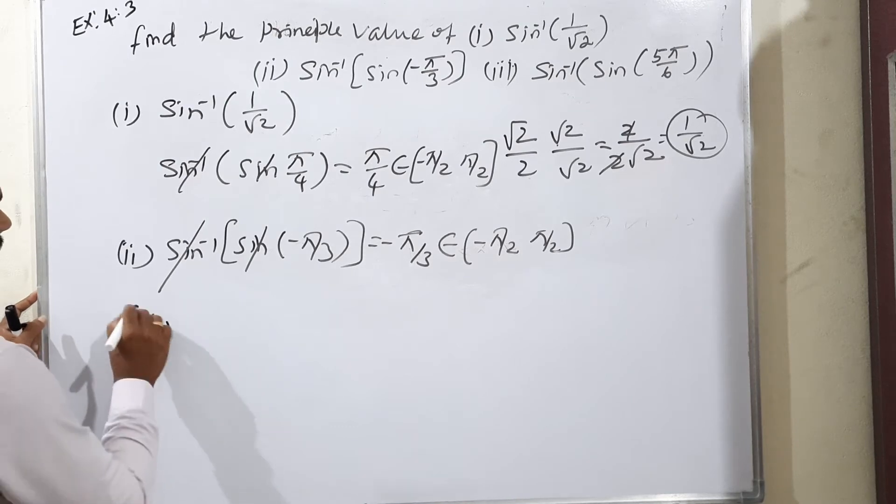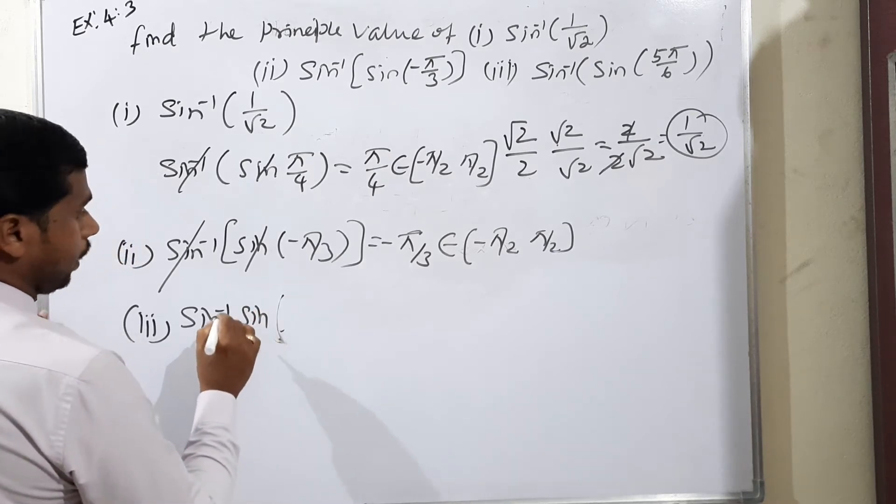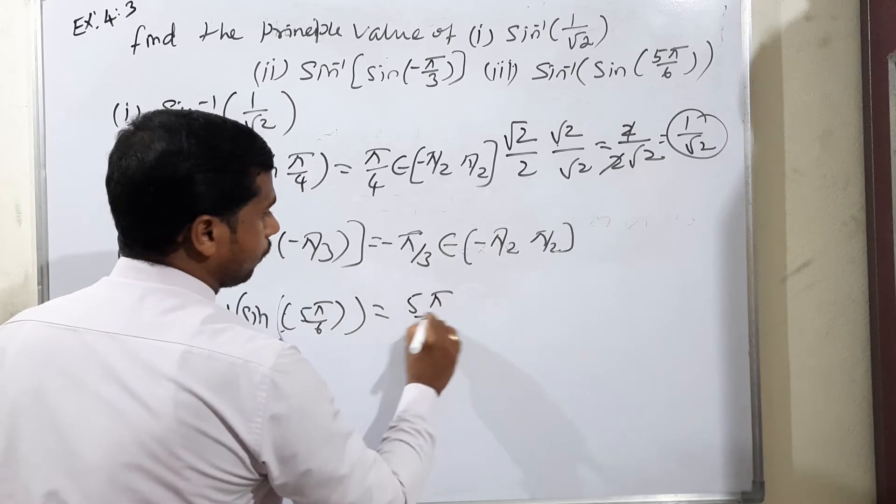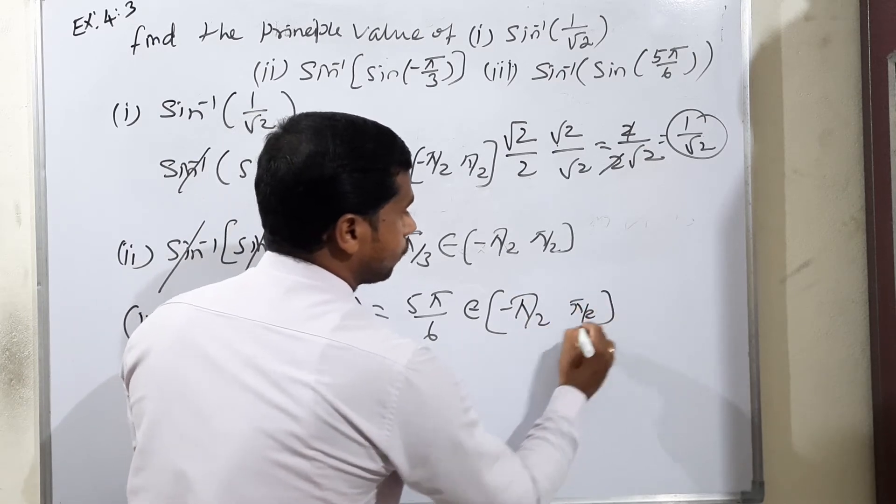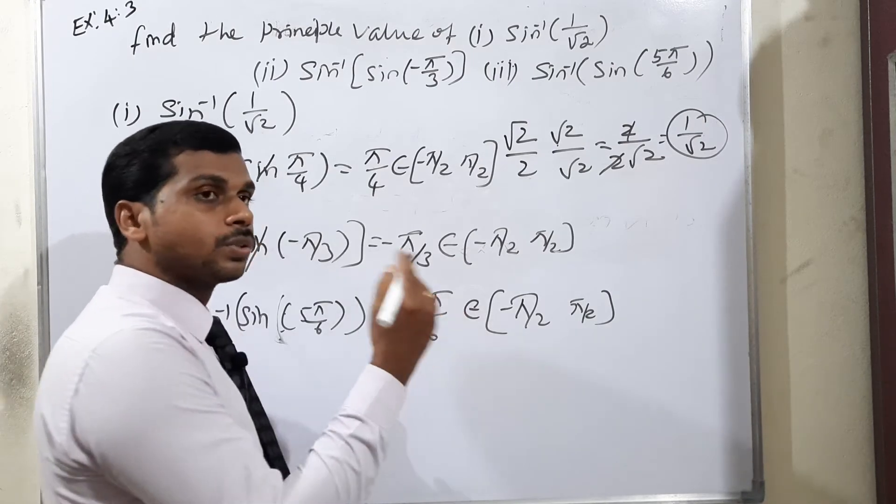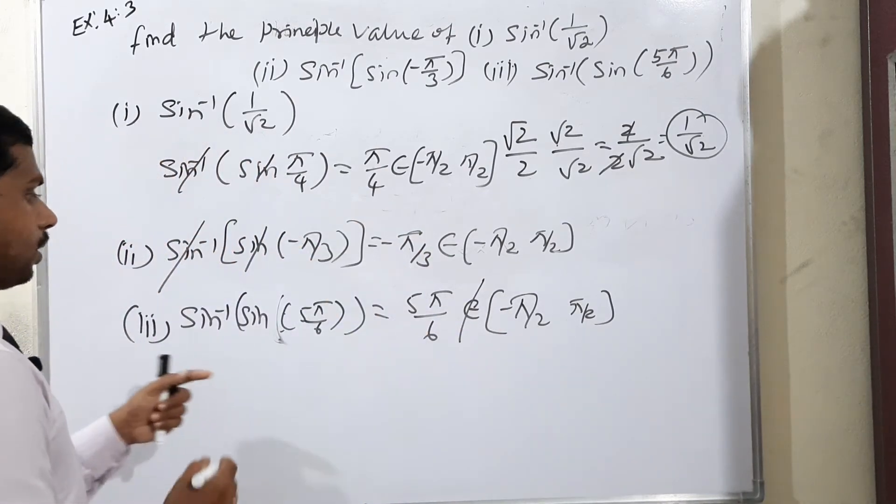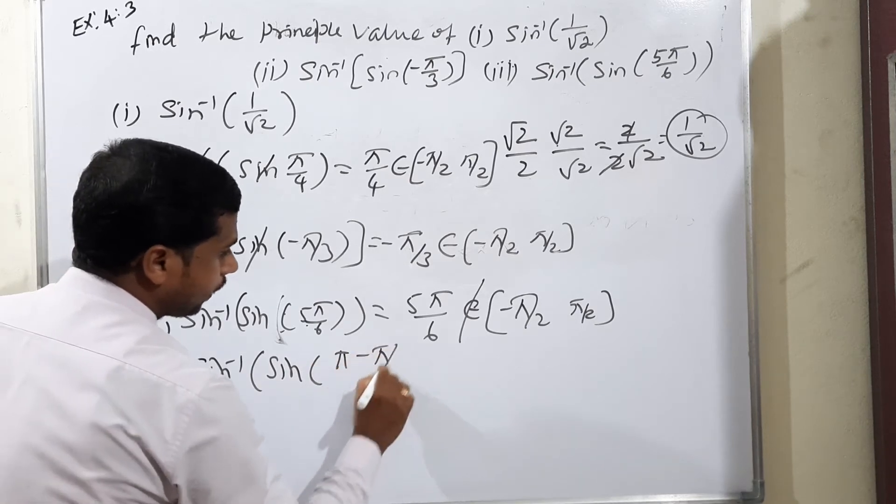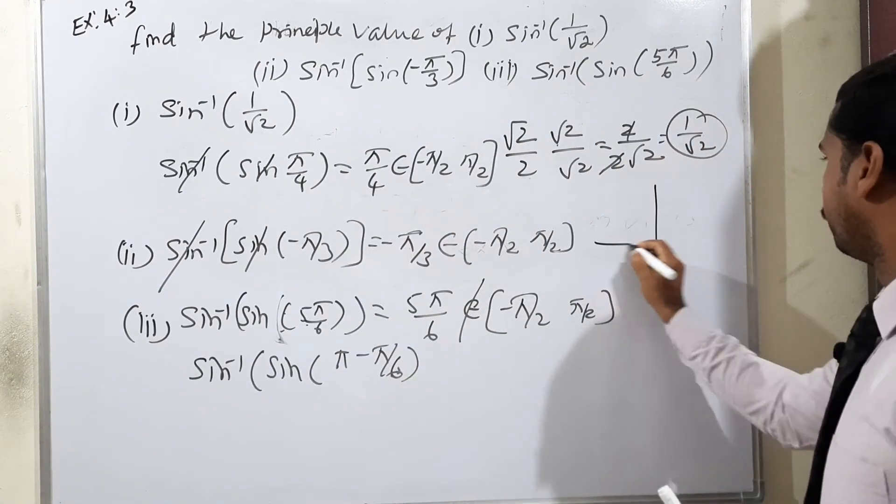Third one, sin inverse sin of 5π/6. Condition says sin inverse and sin cancel. 5π/6. Let's check. It does not belong to -π/2 to +π/2, that is negative 90 to positive 90. 5 and 6 cancel, 30. 30 into 5 means 150. It does not belong to -90 to +90. It does not belong to the value. So just rearrange. How do I rearrange? Sin inverse sin of π minus π/6.